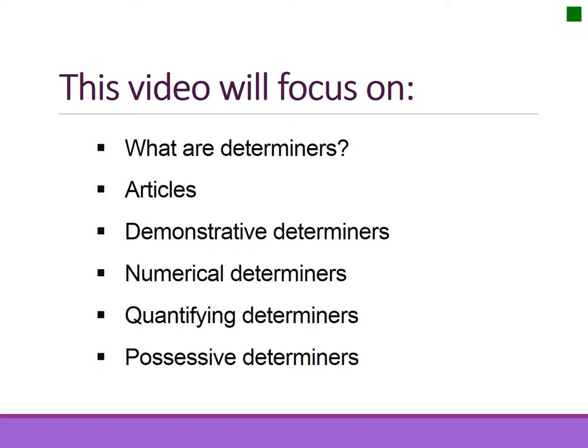The types of determiners covered are: articles, demonstratives, numerical, quantifying, and possessives.